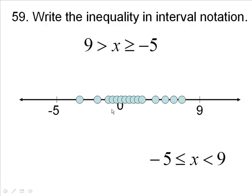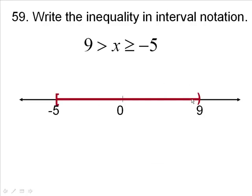So we'll put a bracket on this one. We'll put a parentheses on this side. And now interval notation: we include the negative 5, so we bracket in the negative 5. But we don't include the 9, so I put a parentheses on the 9. Here we are, interval notation.